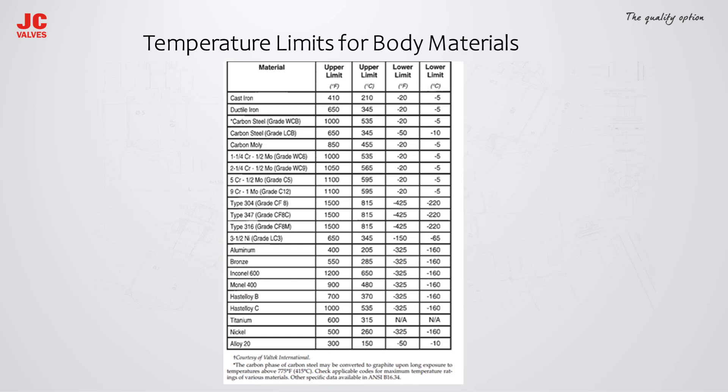Regarding temperature limits for body materials, a carbon steel grade WCB body is limited to a maximum temperature of 415 degrees Celsius. Long exposure above the temperature limit may convert the carbon phase to graphite. The temperature limits of the various materials can be found in the applicable ANSI codes. The table shows a summary of temperature limits for the various body materials.